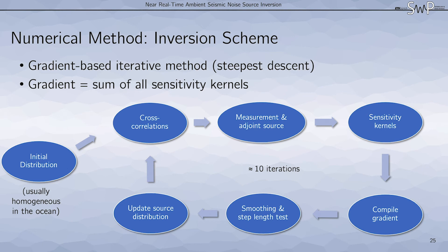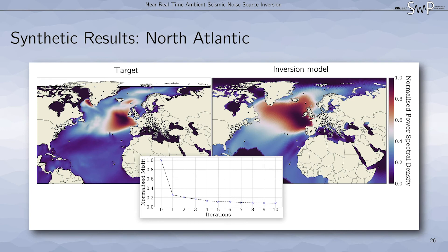So let's have a look at some synthetic results. For this synthetic test, we again used a significant wave height map from the WaveWatch 3 model to forward model cross correlations for 186 stations surrounding the Northern Atlantic. We then perform 10 iterations of our inversion scheme to invert for these synthetically created observed cross correlations.